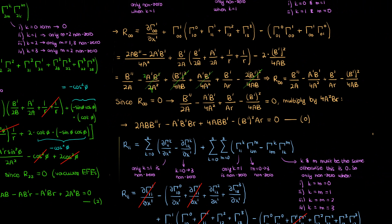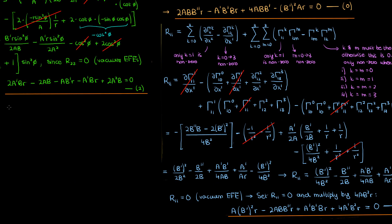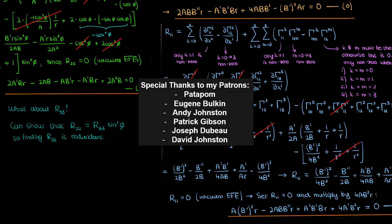So in the end, we've got equations 0, 1, and 2 as our system of nonlinear coupled differential equations that arise from setting the Ricci tensor components to zero in order to solve the vacuum Einstein field equations for the Schwarzschild metric. These are all the equations you need. As for the R₃₃ component, if you go through the algebra you find it's exactly the same as R₂₂ except with an additional factor of sine²(phi), so it's redundant. In the next video I'll solve these differential equations to find A(r) and B(r) and then find the Schwarzschild metric solution.